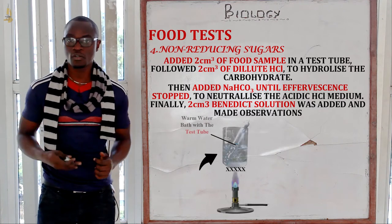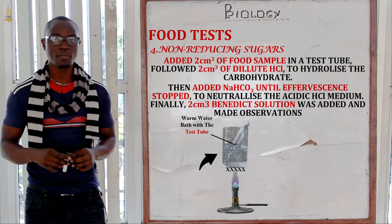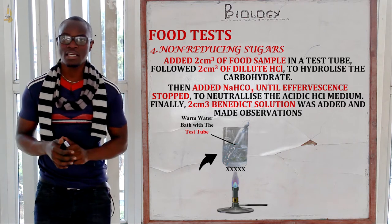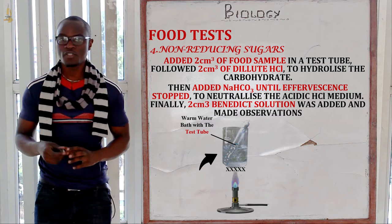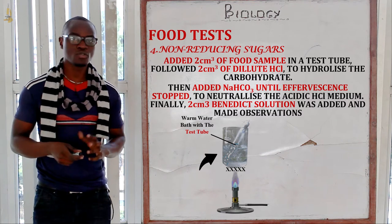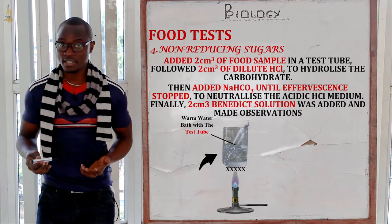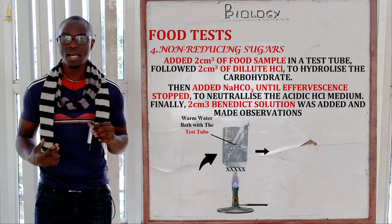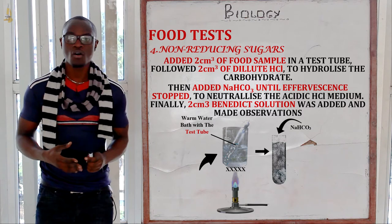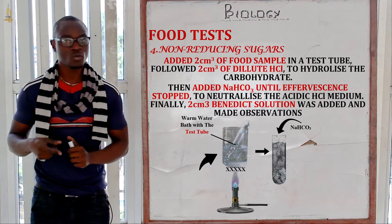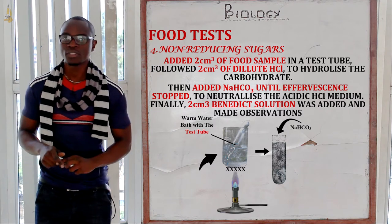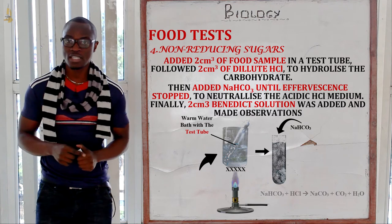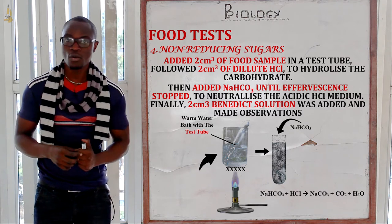After adding a few drops of hydrochloric acid, we take the test tube and place it inside a warm water bath to accelerate the chemical reaction. After placing it in the warm water bath, we extract the test tube and then add about two centimetres cubed of sodium hydrogen carbonate. When adding sodium hydrogen carbonate, you will notice that effervescence and fizzing will occur.